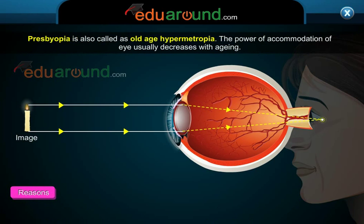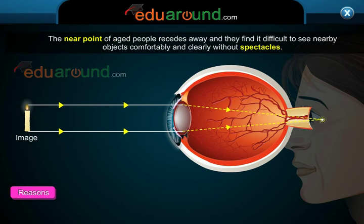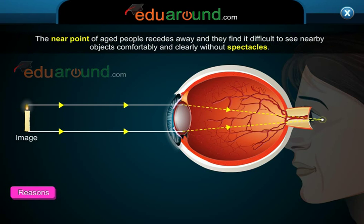Presbyopia is also called old-age hypermetropia. The power of accommodation of the eye usually decreases with ageing. The near point of aged people recedes away and they find it difficult to see nearby objects comfortably and clearly without spectacles.